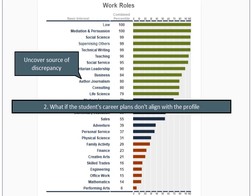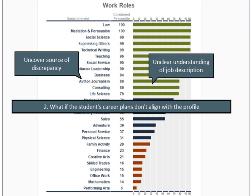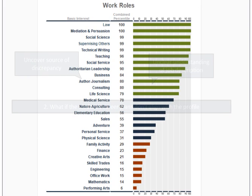In some cases, the student may not understand what is involved with the job he or she is most interested in. For example, with a job like lawyer — students might have a perception of this job based on what they see on TV or in the media, and may not realize it involves technical, research-related, writing, and reading activities. So you can use the JCE results along with other information to help the student make career decisions.